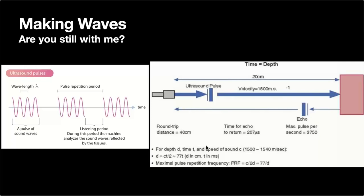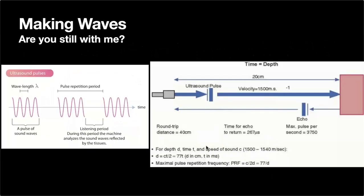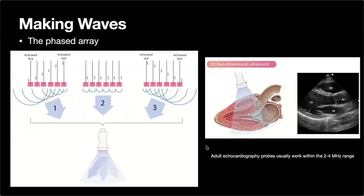There's a relationship between frequency and depth. High frequency and low wavelength means the ultrasound beams won't penetrate structures as deeply. Low frequency and high wavelength gives a longer near field and greater penetration. Frequency is intimately related to this near field distance. The machine is mostly listening, waiting to see how long the echo takes to return and then assessing the distance.